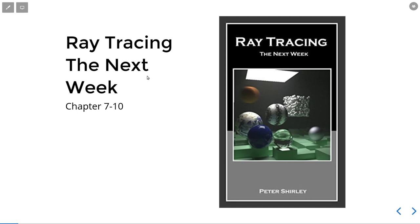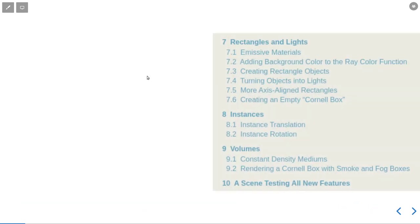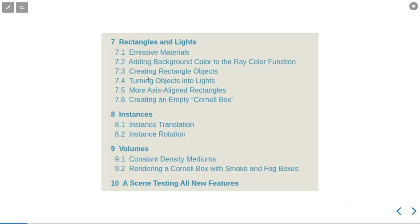Next time we will start to talk about the next book, ray tracing the rest of your life. The topics today are: first we will introduce rectangle shapes, then add some light to the scene, introduce instancing which allows us to have different objects with the same shape but different transformations, and finally introduce volumetric rendering.